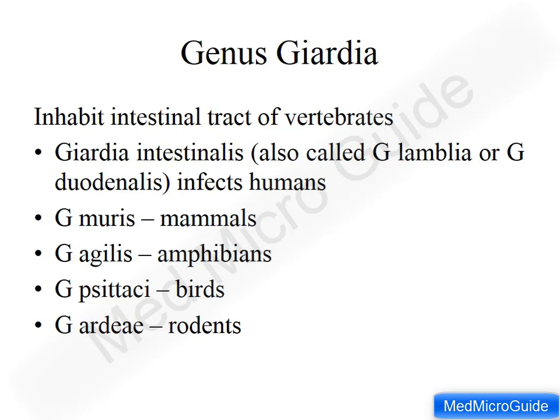The parasite belonging to genus Giardia inhabits the intestinal tract of vertebrates. There are various Giardia species which affect various animals including human beings. Giardia intestinalis, also called Giardia lamblia or Giardia duodenalis, infects humans and some rodents. Giardia muris infects mammals. Giardia agilis infects amphibians. Giardia sitaki infects birds. Giardia arde infects rodents.